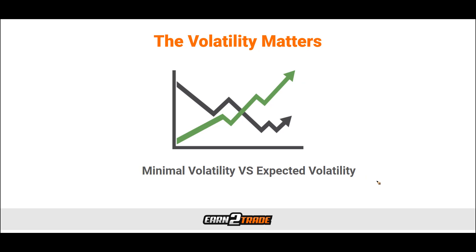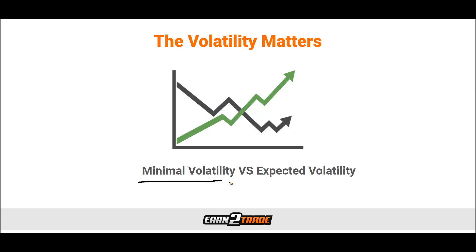When looking at butterfly spreads, volatility matters. There are two scenarios: minimal volatility and expected volatility. With minimal volatility — suppose we believe a stock or index will experience minimum volatility over a specific period — we can use a long call butterfly spread and long put butterfly spread to create a position. There will be a net cost to set up this strategy, but that will be our maximum loss, and we can calculate the maximum potential profit when opening the position. When we have expected volatility on the upside or downside, it may be sensible to look at a short call butterfly spread or short put butterfly spread. As we are buying at-the-money calls and puts, there is no intrinsic value — just time value — so movement in the right direction will maximize our profits.